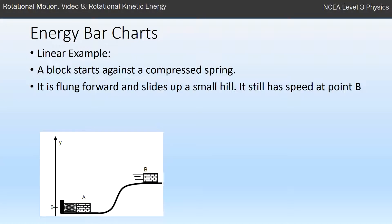So let's say we have a block compressed against the spring as shown in the diagram, picture A, and it's flung forwards and slides up a small hill. When it gets to point B, it still has speed. Let's assume that no energy is lost to heat. So our energy bar chart for position A, the types of energy we could have is spring energy, gravitational and kinetic. I've chosen to give it five blocks of spring energy. The choice is arbitrary, but I've chosen five here.